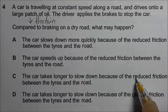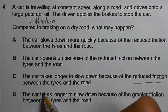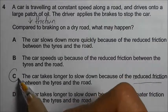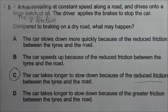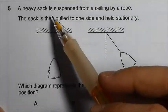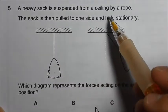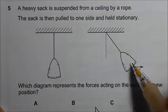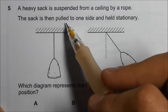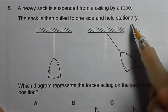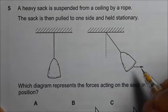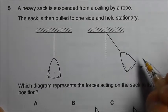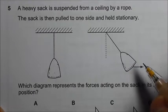We have a heavy sack that is suspended from the ceiling by a rope. This is before and this is after, when it is being put to one side and held stationary. Since the sack is stationary, that means it is at equilibrium such that all the forces acting on the sack balance out each other.